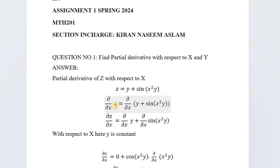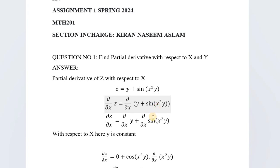We write ∂z/∂x, and we split the expression: we take the partial derivative of y separately, plus the partial derivative of sin(x²y) separately.